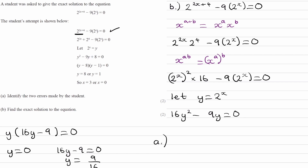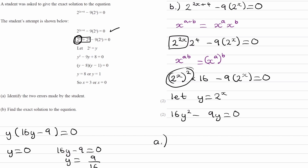In the second step, the student has tried to split the expression into two parts. We can see from our own working that there is a first mistake here, so let's put that in a box and come back to it. Now assuming that line is correct and moving to the next line: the student lets 2 to the power of x equal y — we did the same thing. Then it says y squared minus 89y plus 8. The y squared is fine: 2 to the power of 2x becomes y squared. But 2 to the power of 4 should be 16, and the student has written plus 8 instead — so there is our second mistake.